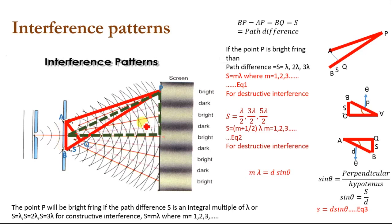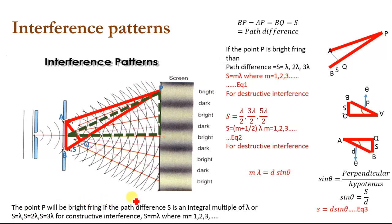Now we will explain constructive and destructive interference. When two waves are in phase, they will constructively interfere and create bright fringes on the screen. Point P will be a bright fringe if the path difference S is an integral multiple of lambda — that is, S equals 1λ, 2λ, 3λ, and so on. When S equals (m + 1/2)λ — that is, λ/2, 3λ/2, 5λ/2, and so on — destructive interference will happen and we will observe a dark fringe on the screen.